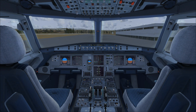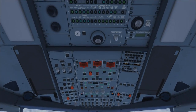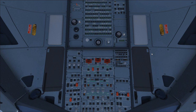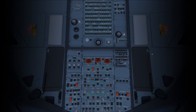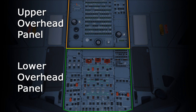The best way to show you the cockpit is to start at the top and work down, so we'll begin with the overhead panel. The overhead panel is split into two main halves: the upper overhead panel at the top and the lower overhead panel at the bottom. You can't actually click on anything on the upper overhead panel — it has circuit breakers and a few buttons for backup systems — so we'll focus our attention on the lower overhead panel.